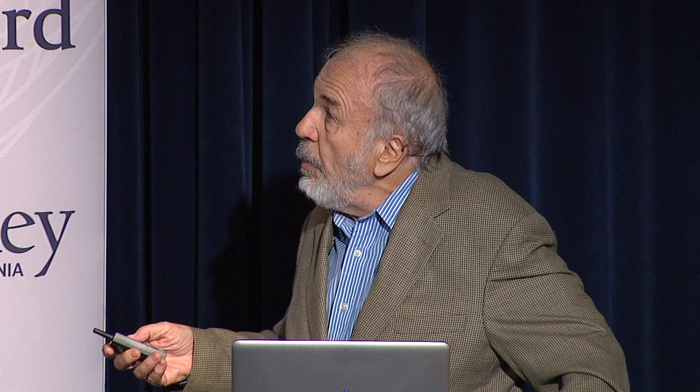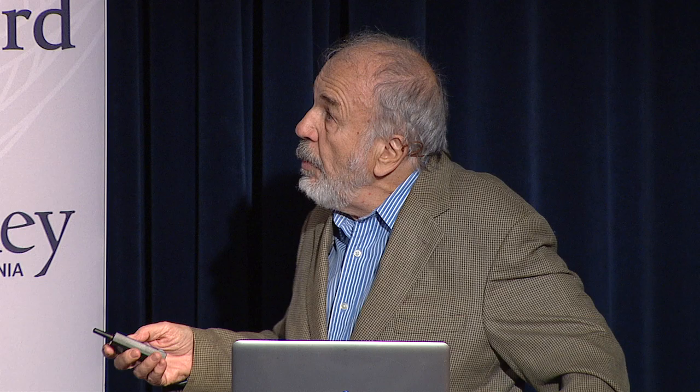After formation of each peptide bond, you need to move the tRNAs through the ribosome. These are large macromolecules — 25,000 daltons each — that need to be moved through the ribosome at the rate of about 20 per second with great accuracy. Simultaneously, the messenger RNA needs to be moved along with the tRNAs to maintain the translational reading frame.